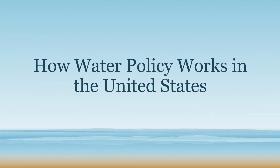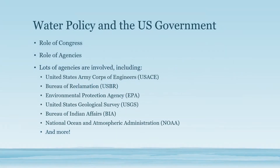Now we're going to look at how water policy works in the United States. Congress is generally in charge of authorization and appropriation for federal water projects, and it appropriates funds to agencies that then carry out those policies. In addition to the legislative and executive branches, the court system can also be involved in water resource issues by reviewing and approving or rejecting legislation or agency policy. We'll talk about this more in the second part of the video, debating the water resources topic.